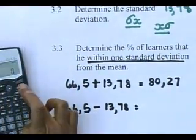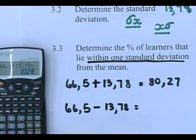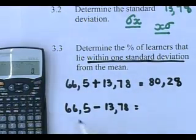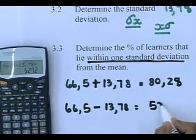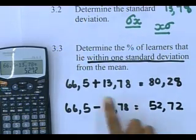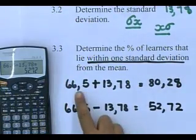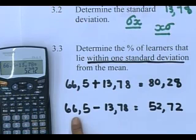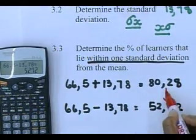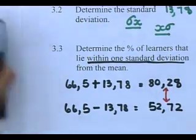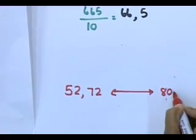You also take the average minus one standard deviation. That gives me 52.72. So it's 66.5 plus 13.78, which gives 80.28; and 66.5 minus 13.78, which gives 52.72. The question asks: how many learners fall within one standard deviation from the mean? You go look how many learners fell within these two values — between 52.72 and 80.28.